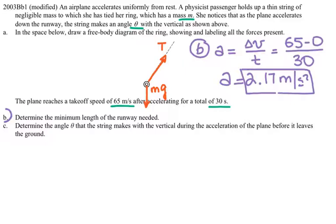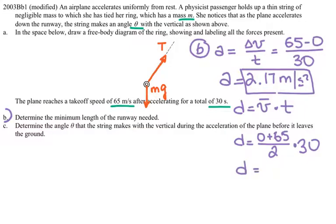And to find the length, I could use average velocity times the time. I didn't even need to find the acceleration in this case. The average velocity is 0 plus 65 divided by 2 times the time, which is 30 seconds, and the distance that gives me is 975 meters.